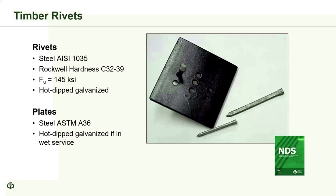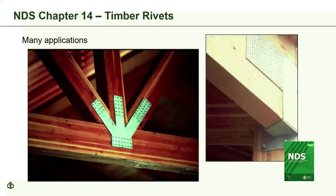Each rivet shall be placed with its major cross-sectional dimension aligned parallel to the grain of the wood. Rivets are driven through circular holes in the side plates until heads are firmly seated — but rivets are not to be driven flush. Perimeter rivets are driven first, then remaining rivets are driven in a spiral pattern from outside to center. One reason to consider timber rivets is their load-carrying capacity, typically measured in tens of kips — a very high capacity connection for wood.